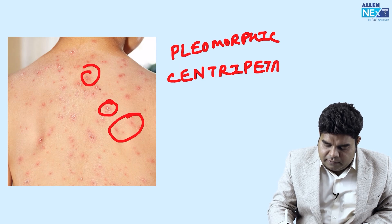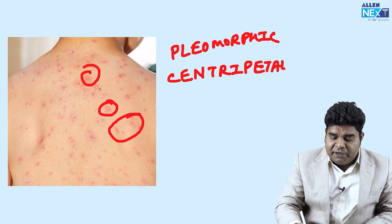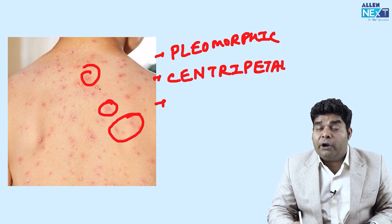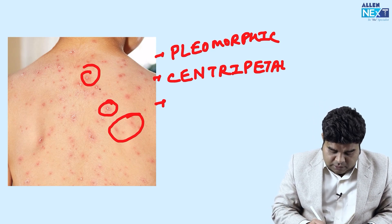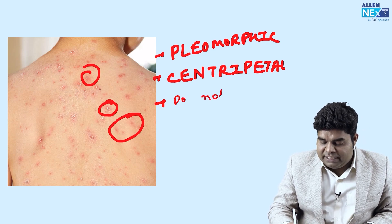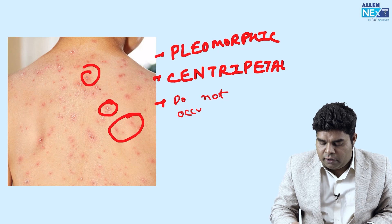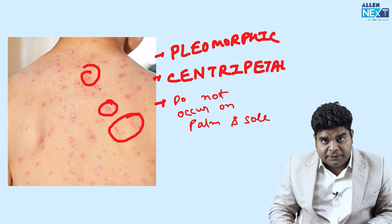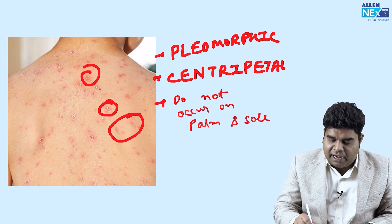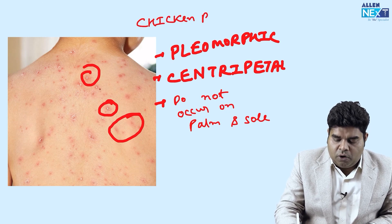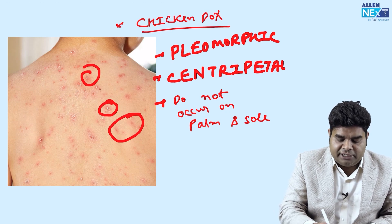If it is centripetal, it means the rashes will not occur on palm and sole. So, what are these rashes which do not occur on palm and sole, which are centripetal and which are pleomorphic? These are the rashes of chickenpox, and it is caused by varicella zoster.